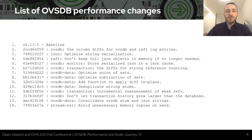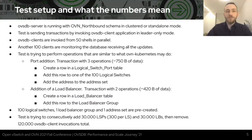We will take a look at each of them separately. OVS 2.13 latest table will be our baseline. Now let's take a look at the test scenario. The following test will be used to check performance. In this test, OVSDB server is running with OVN northbound schema in clustered or standalone mode. The test sends transactions by invoking OVSDB client application in leader-only mode. OVSDB clients are invoked from 50 parallel shells.